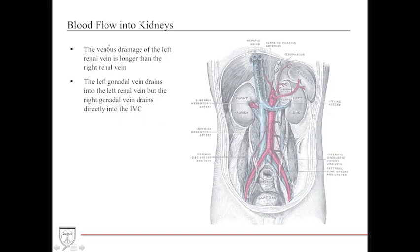The left renal vein is longer than the right, and the left gonadal vein enters it at a 90-degree angle. This can predispose to thrombosis and varicoceles in males. Also, because of the longer left renal vein, surgeons often prefer to harvest the left kidney for transplant, as the extra length provides more slack during reanastomosis in the transplant recipient.